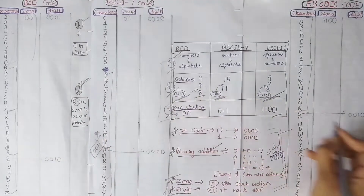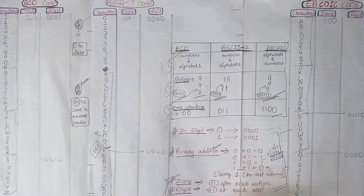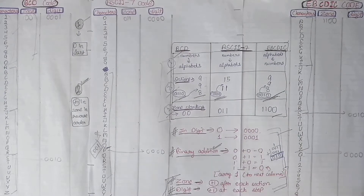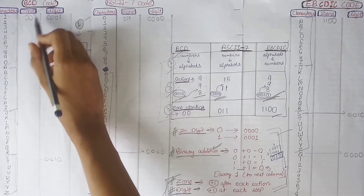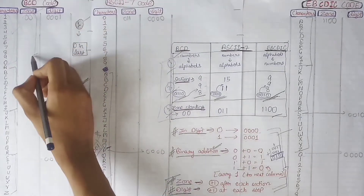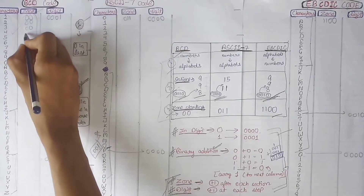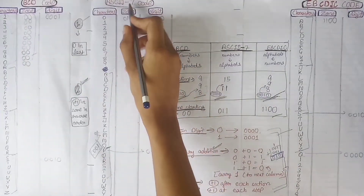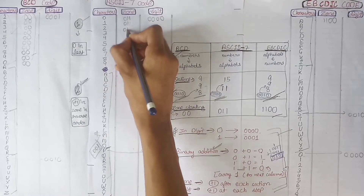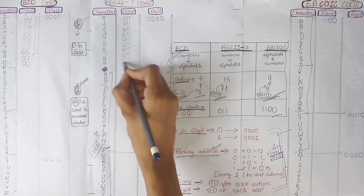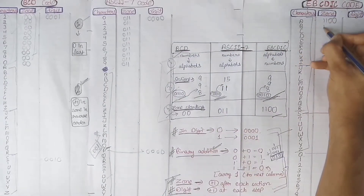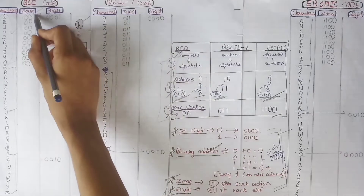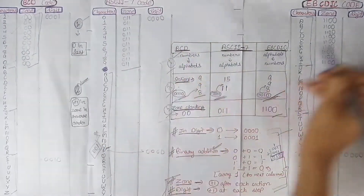To complete these three codes we will use binary addition and the two basic rules. In the zone area, we add 1 after each section, meaning in the zone column we write the same value throughout one section. So this is our first section, and during this whole section we write just 00 for BCD, and similarly for ASCII and EBCDIC. We have now completed the first sections of all three codes.